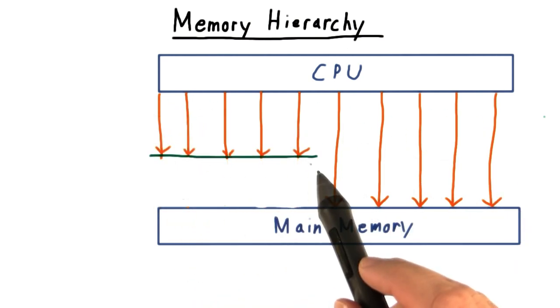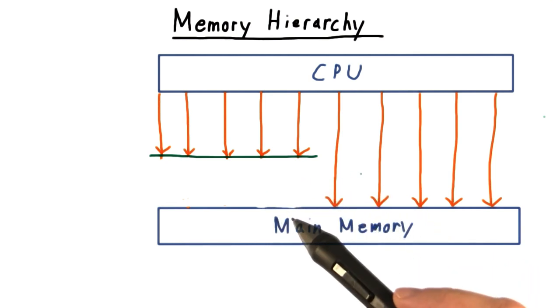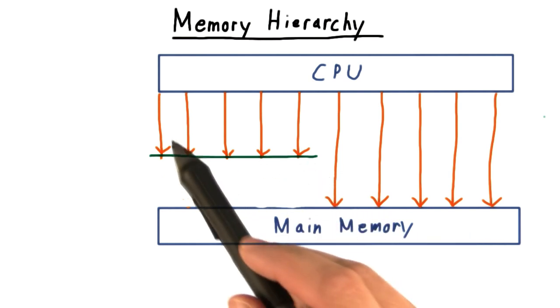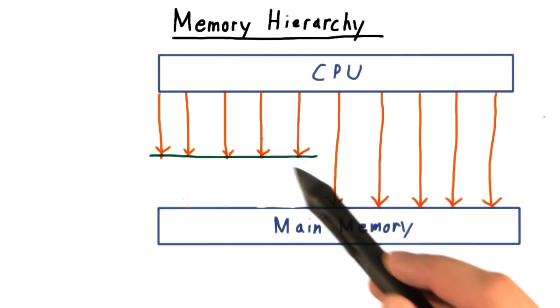Or we could have a large cache, but this would be slow, either because of the physical limitations like the speed of light, or because of the high cost of fast hardware. So we intercept more requests from the CPU, but we aren't able to return them as quickly.